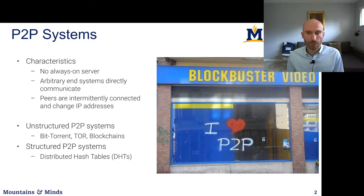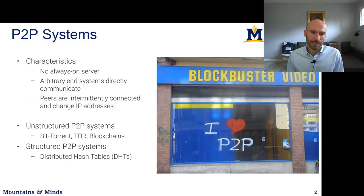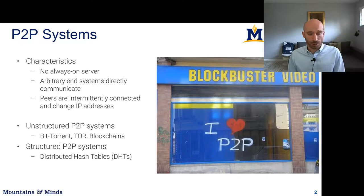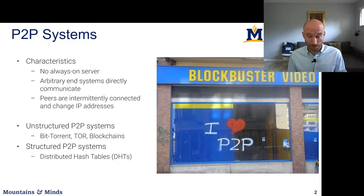Generally, we divide peer-to-peer systems into unstructured peer-to-peer systems, such as BitTorrent, Tor, and blockchains — even though blockchains are pretty complex and a bit of a hybrid — and structured peer-to-peers, which are basically distributed hash tables and various systems built on top of them.